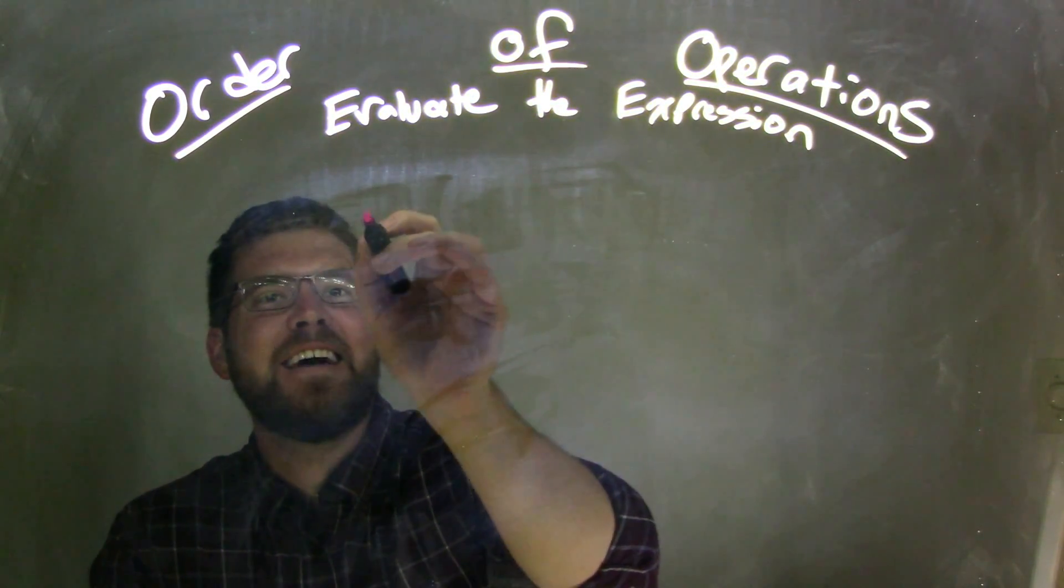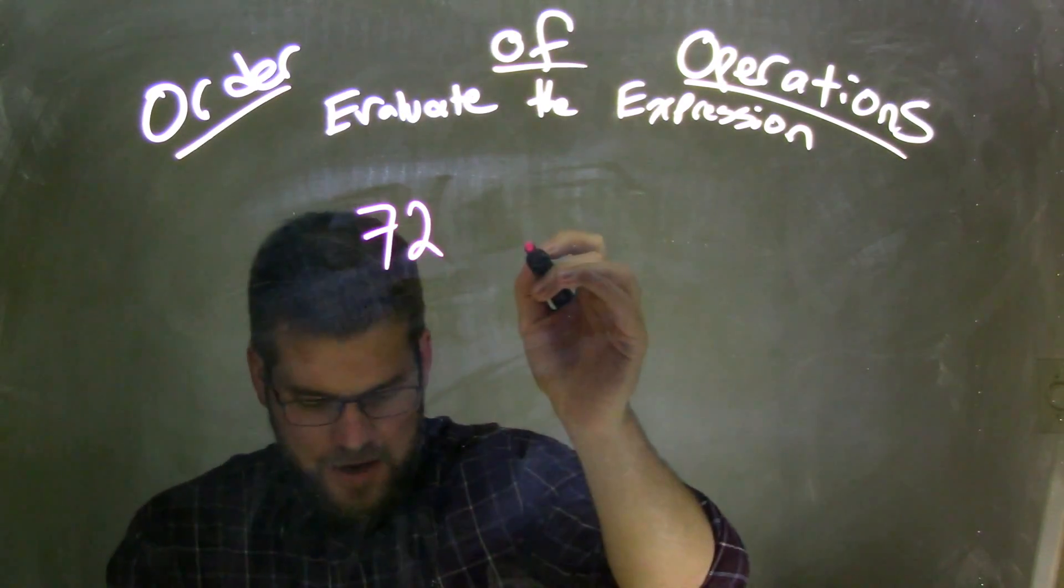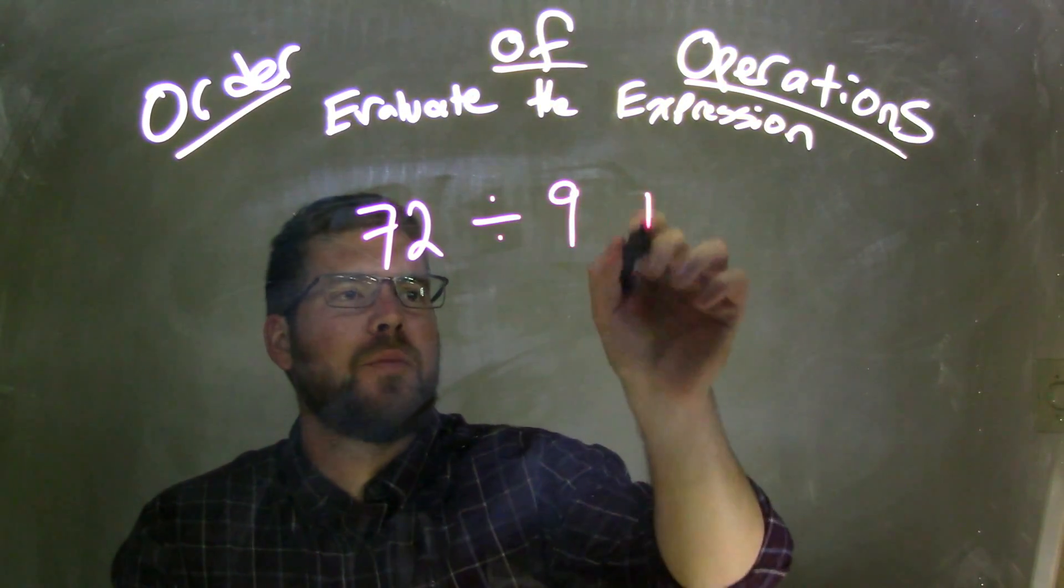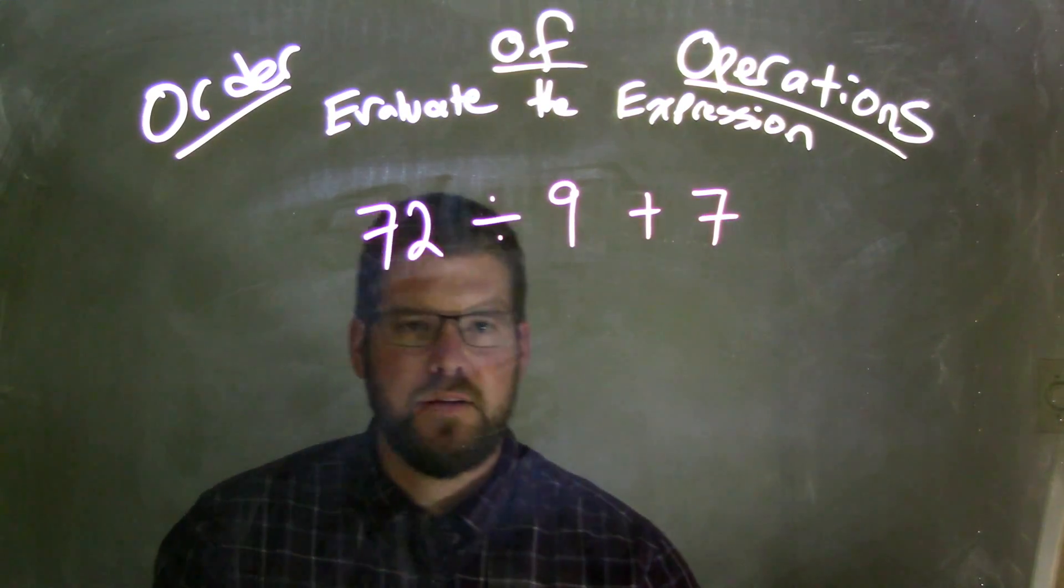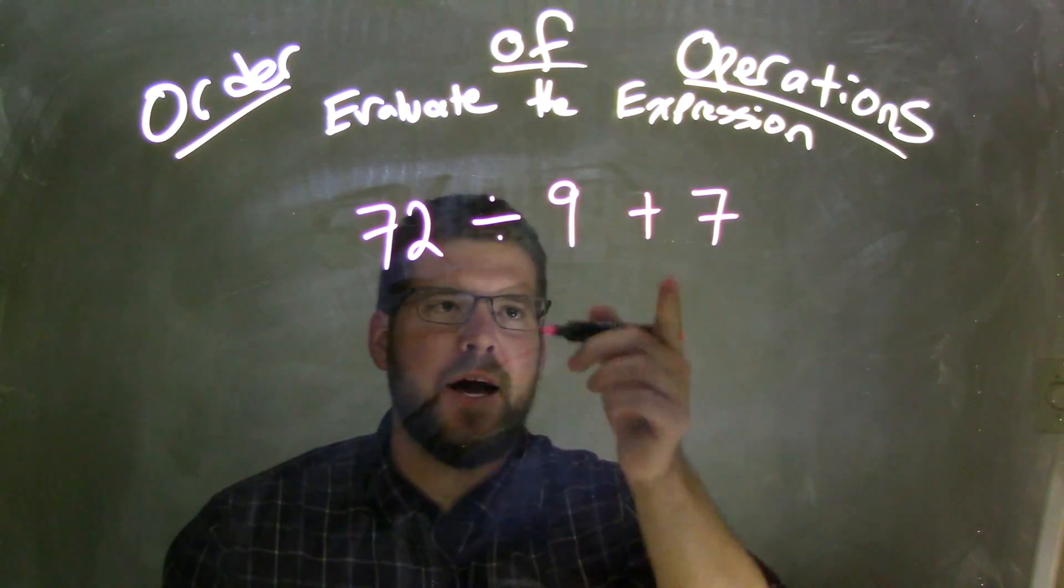What we have here is this expression: 72 divided by 9 plus 7.